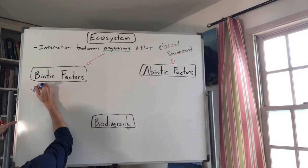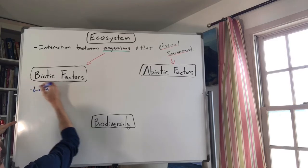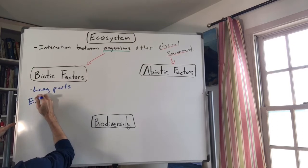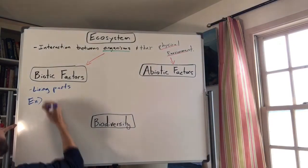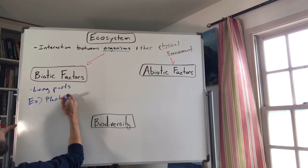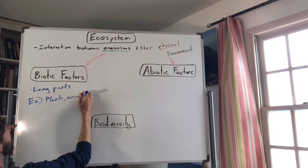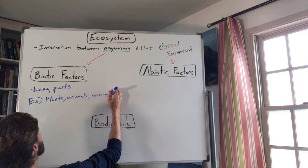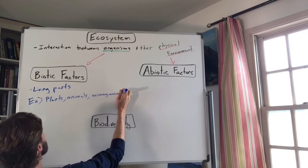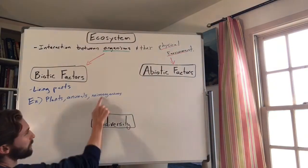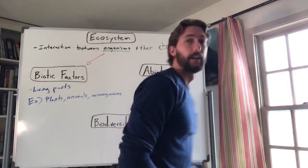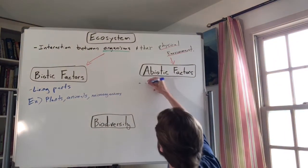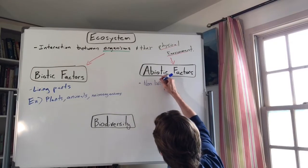Biotic factors are the living parts of an ecosystem. Examples of living things include plants, animals, and even microorganisms like bacteria.